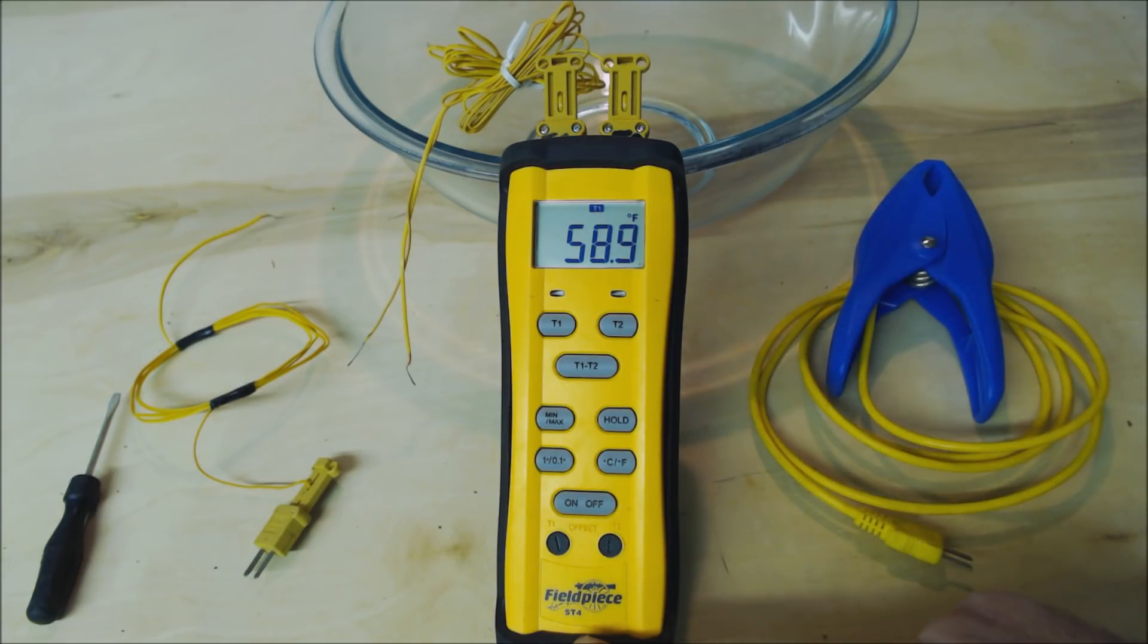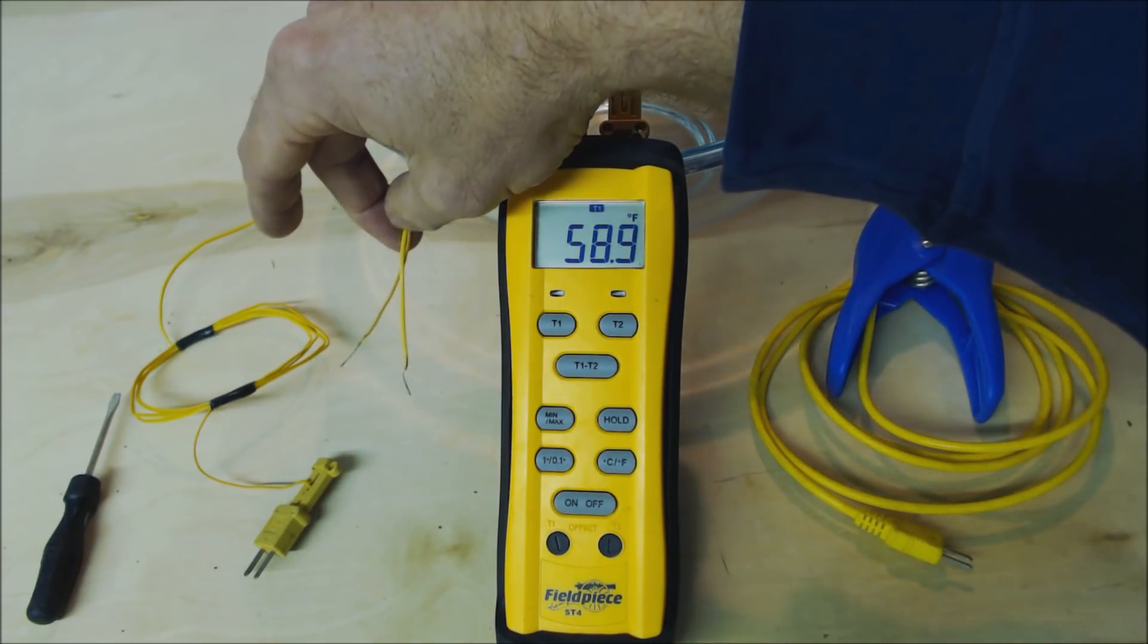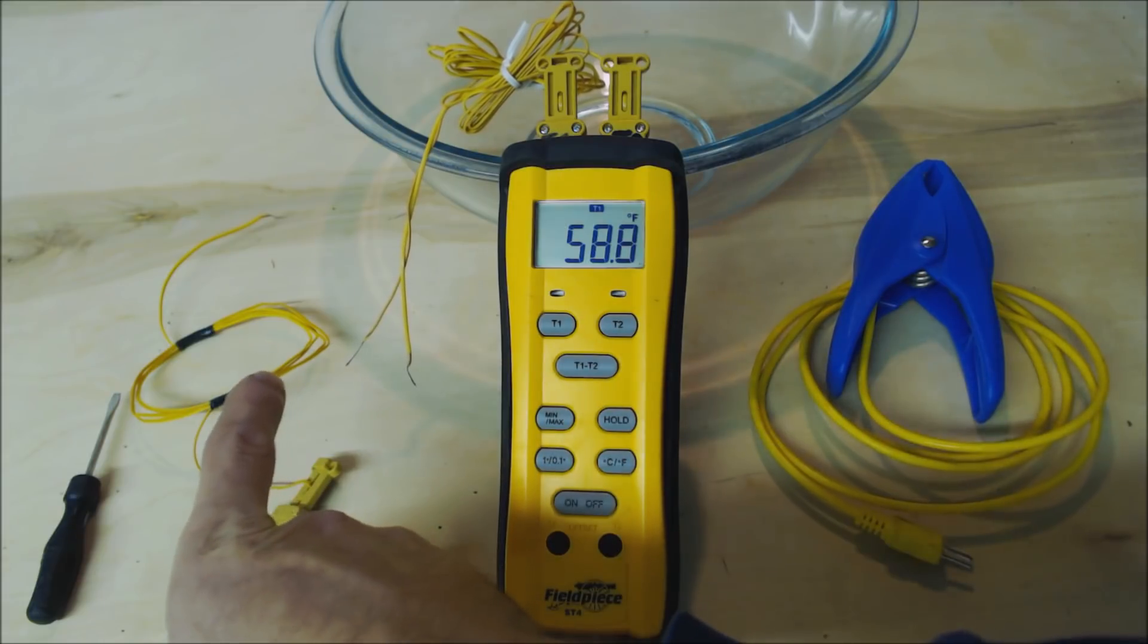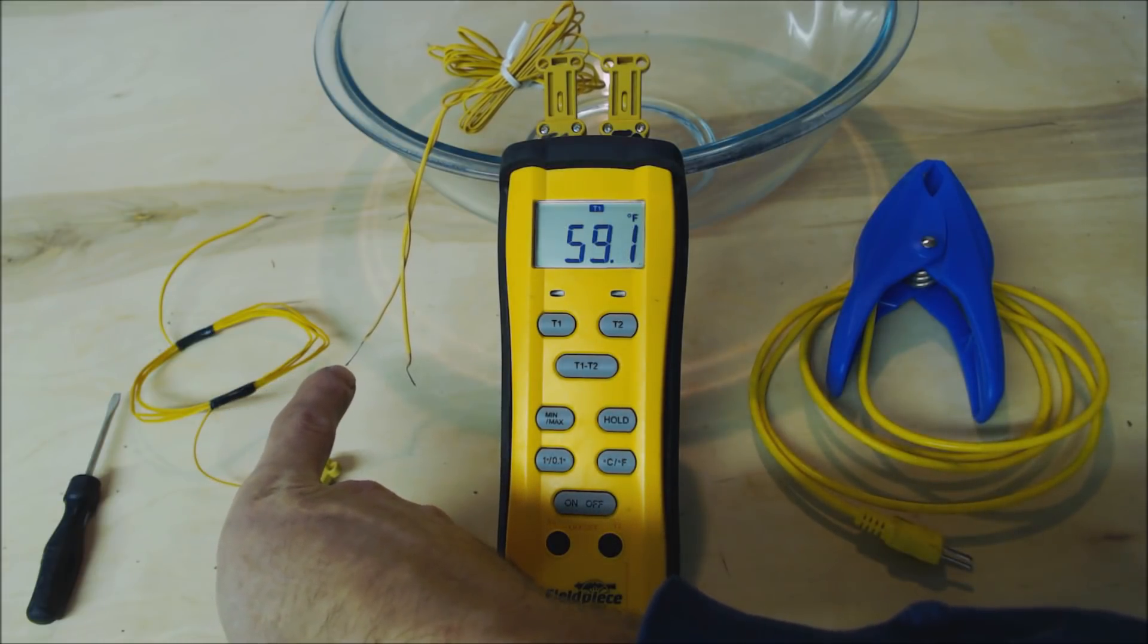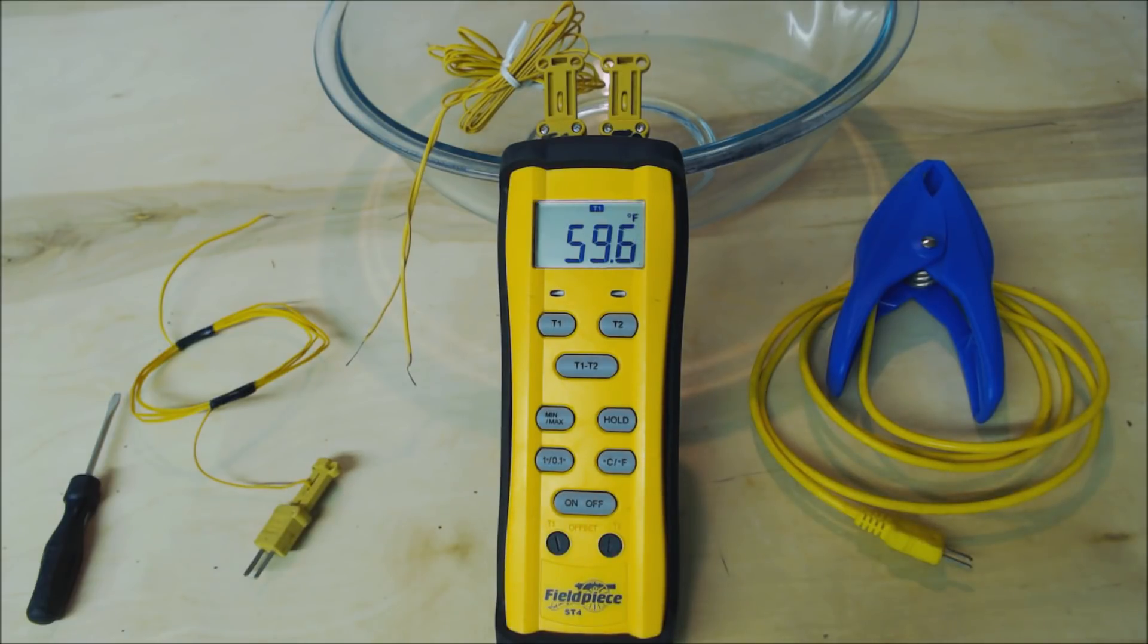In this case it's a Field Piece ST4 and this one comes with two bead K-type temp sensors. They're actually thermocouples so they have two dissimilar metals welded together on the end and these are very accurate for taking your temperature readings which are very important to the HVACR technician.